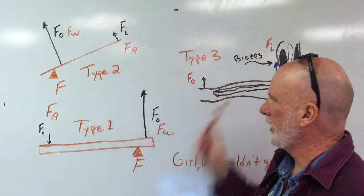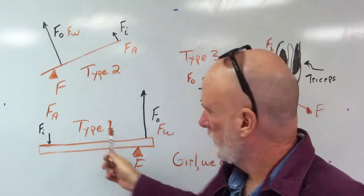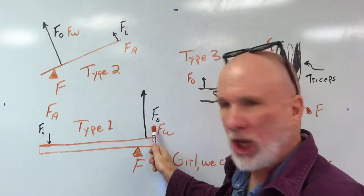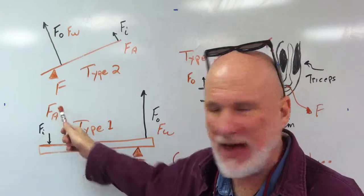Type one, two, three. Type one, the fulcrum, F, is between the load or the output force and the input force, the FA.